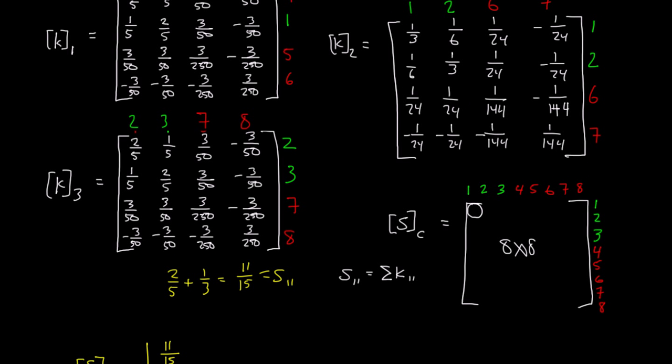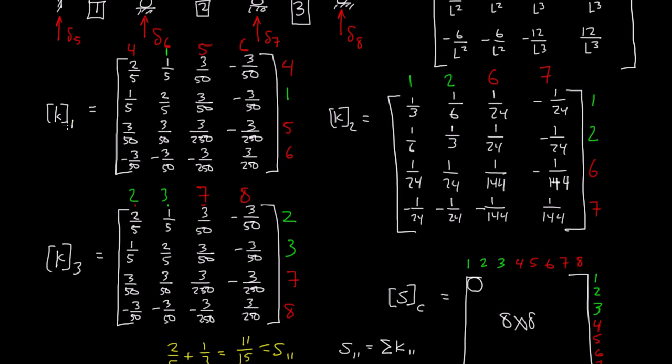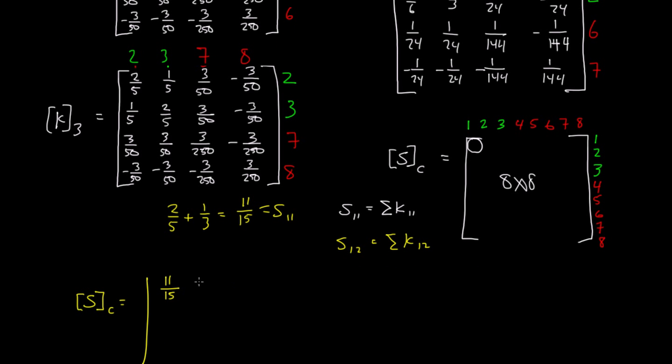We start with S sub complete. The first value is going to be 11/15. Then we move on to S sub 1,2, which is equal to the sum of all K sub 1,2s. We start at K sub 1 and look for a 1,2. In this case, there is no 1,2. We move on to K2 and have a 1,2, which is 1/6. Then K sub 3 has no 1,2. So S sub 1,2 becomes 1/6.